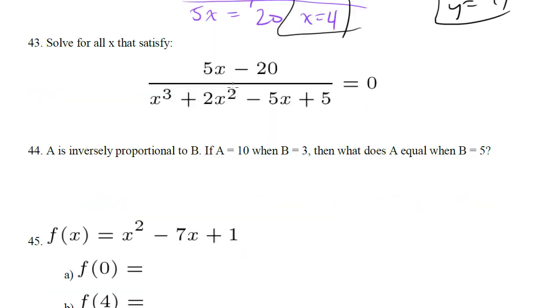Solve for all x that satisfy this. Well you might look at this and freak out because it looks crazy, but really it's not that bad because we want to know when this equals 0. And the denominator is irrelevant because the denominator will never make this equal 0. It's only going to be the numerator that matters. You can also cross multiply and see that this just goes away.